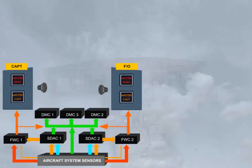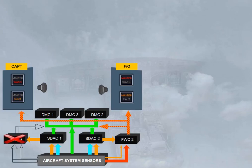The master warning lights and the master caution lights are triggered by both flight warning computers, but independently. FWC1 will turn on the captain lights and the first officer lights. FWC2 will turn on the captain lights and the first officer lights. Notice that in case of one FWC failure, the other FWC ensures all ECAM functions, but it will trigger only its part of the master warning and master caution push buttons.